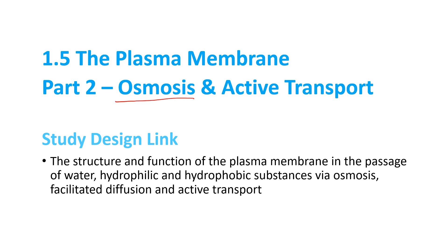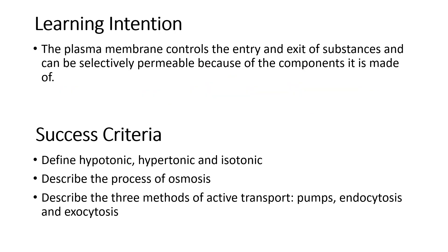In this section we're learning about osmosis, which is the third type of passive transport, and then we'll also be learning about the different ways that cells can actively transport materials. Our key learning intention is that the plasma membrane controls the entry and exit of substances. After this section you should be able to define the three keywords — hypertonic, hypotonic, and isotonic — describe osmosis, and describe the three methods of active transport.